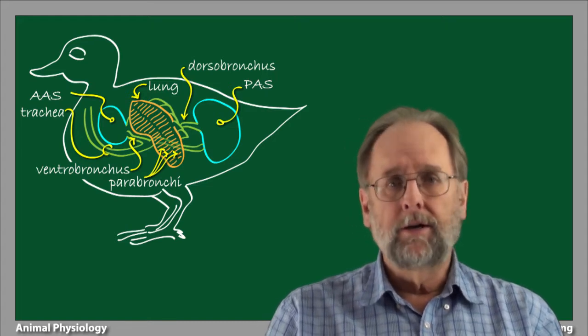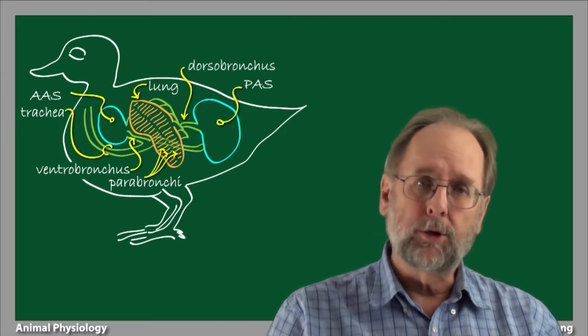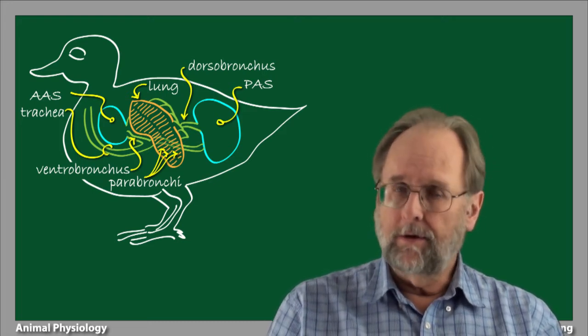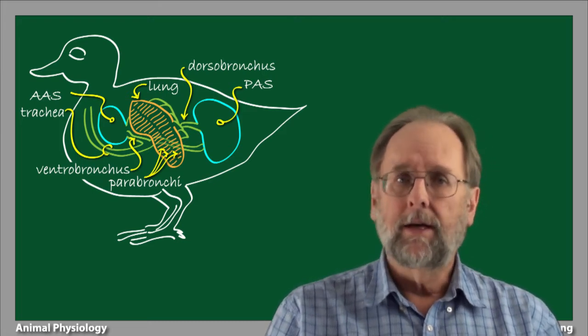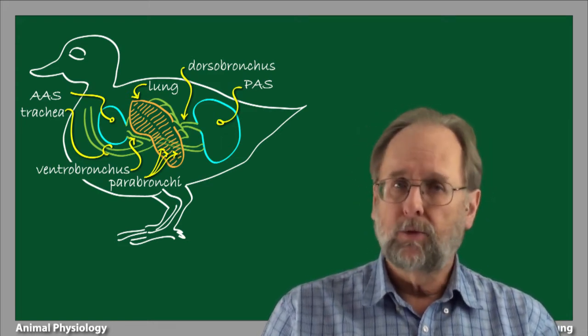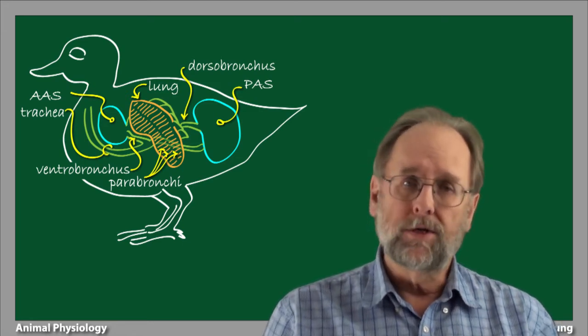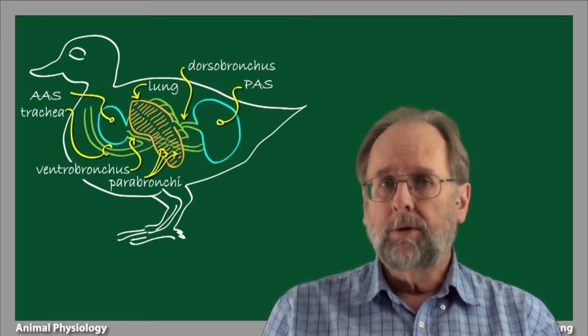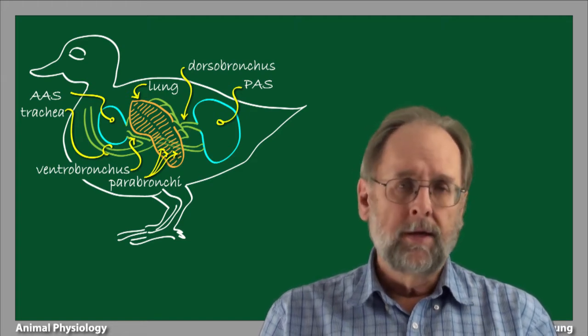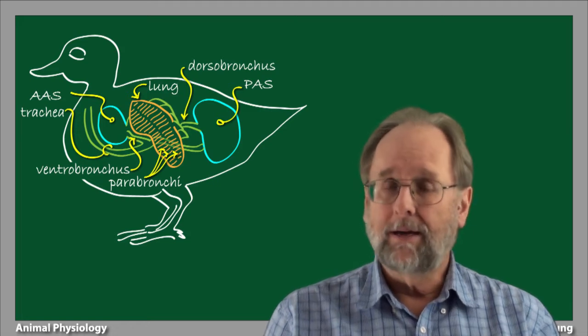The movement of air through the bird lung is radically different from how air moves through the alveolar lungs of mammals. An alveolar lung is ventilated tidally; that is, a parcel of fresh air is drawn in, exchanges gas with the blood at the alveoli, and then this spent air is forced out. The bird lung, in contrast, is a flow-through lung. Air flows in one direction through the lung and not back and forth.